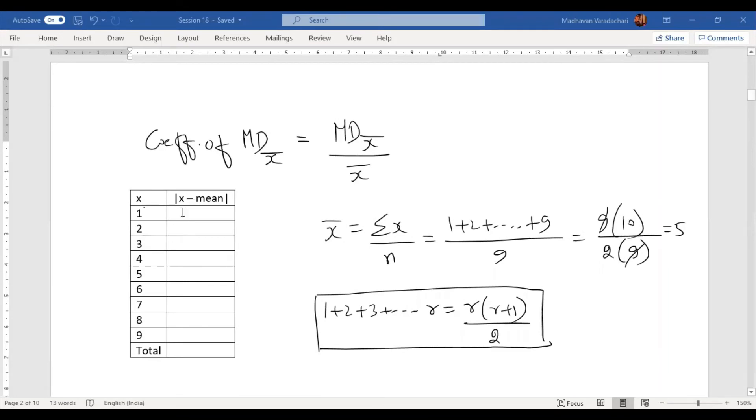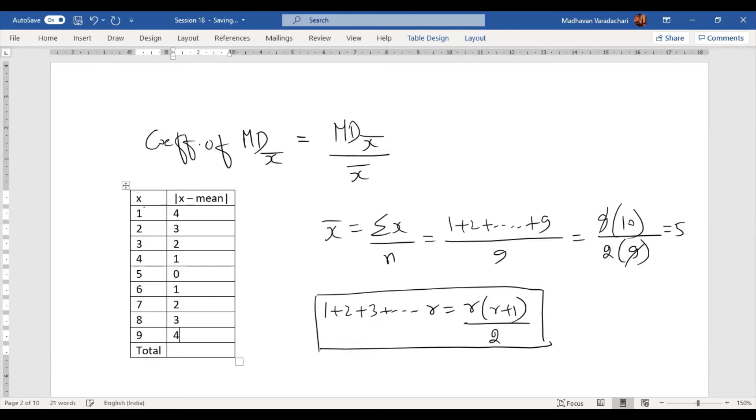Now here, 1 minus 5 which is negative 4, but there is an absolute sign so I'll write 4, then comes 3, then 2, then 1, then 0, again 1, 2, 3, 4. So here we will have to add: this is 3 plus 3 is 6, 6 plus 4 is 10, 10 plus 10 is 20. So this total is 20.